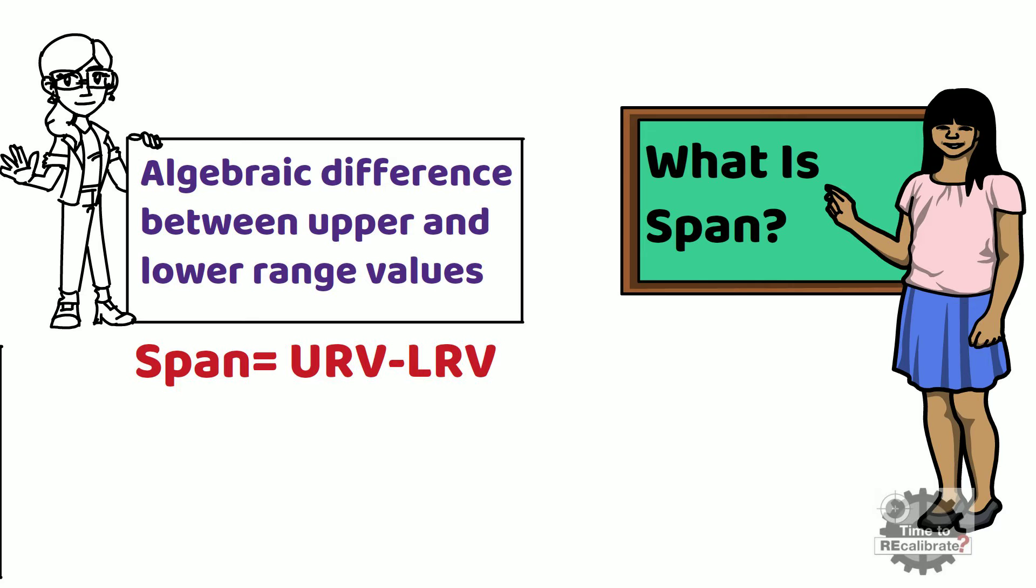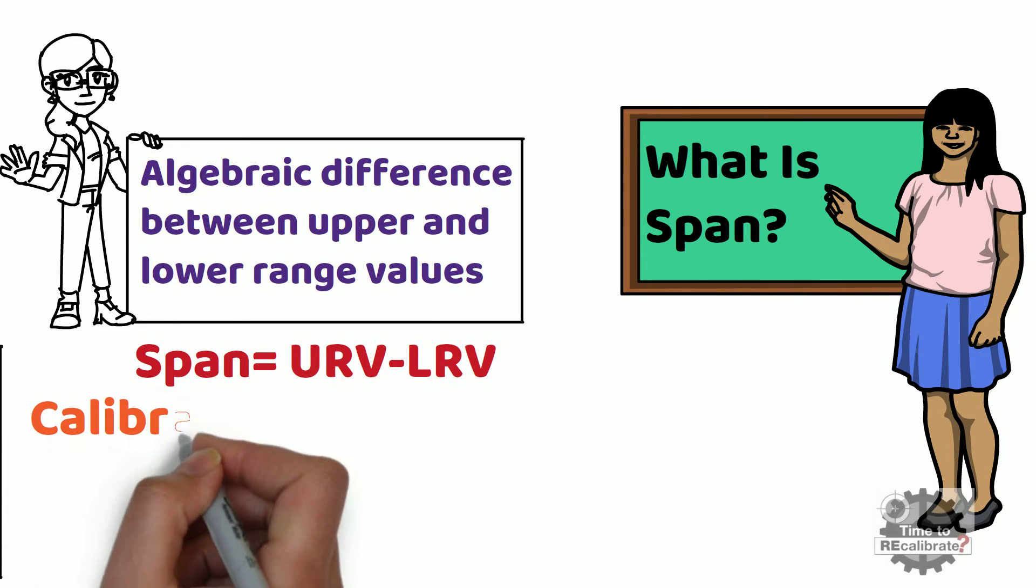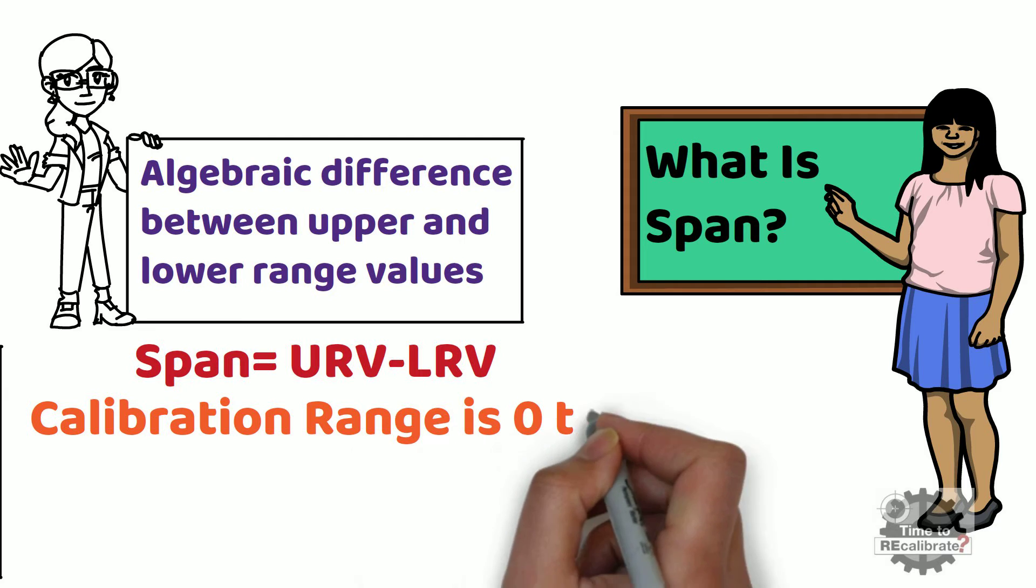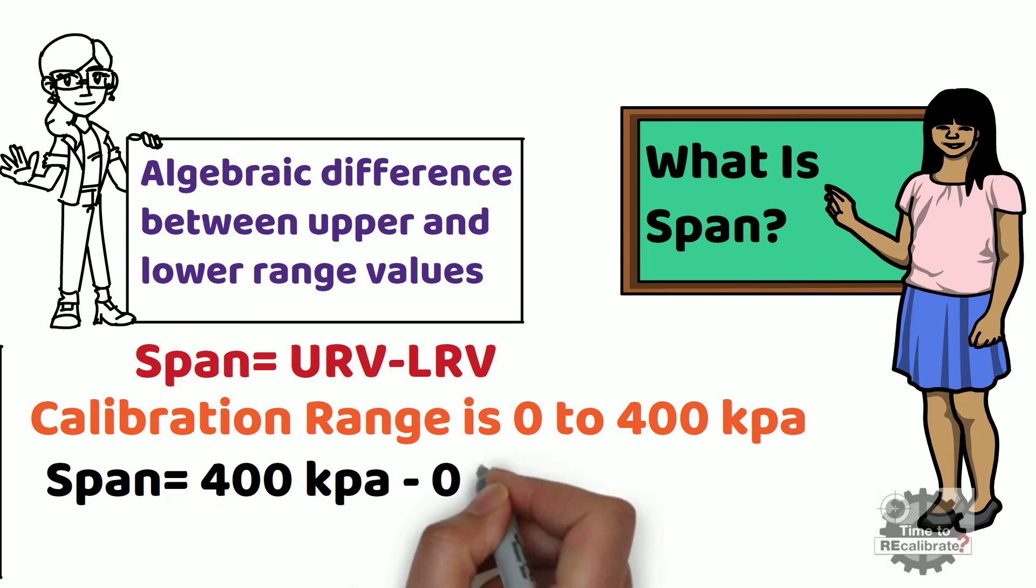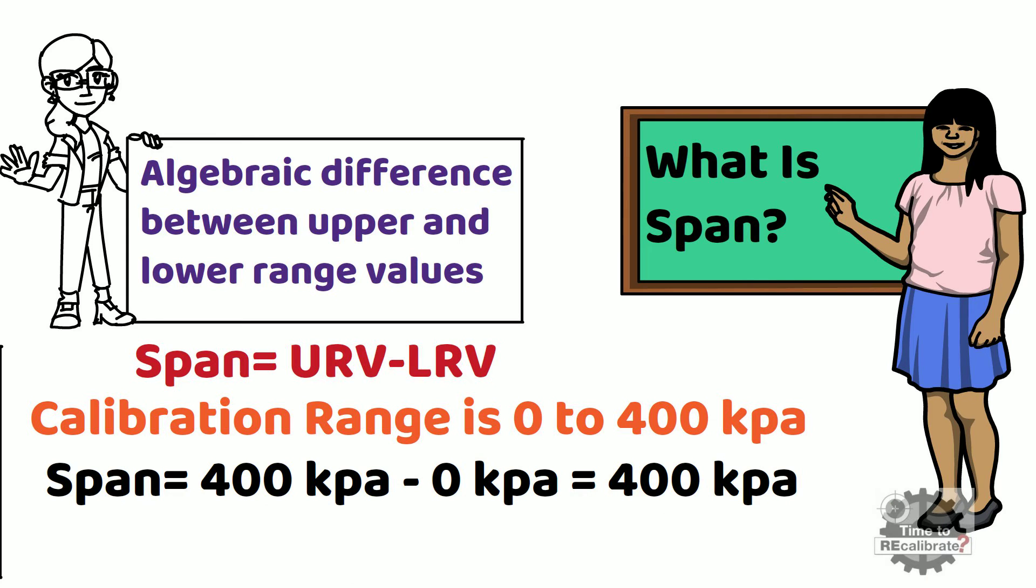Let's take one example to understand this thing. Let us assume that pressure transmitter calibration range is 0 to 400 kPa. What is span value of this pressure transmitter? In this example, span value will be 400 minus 0. So span value will be 400 kPa.